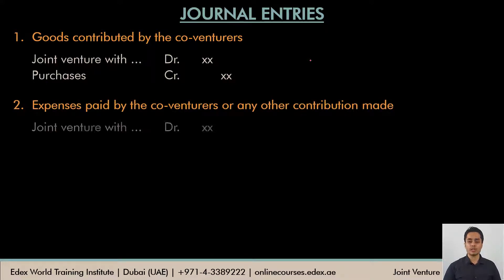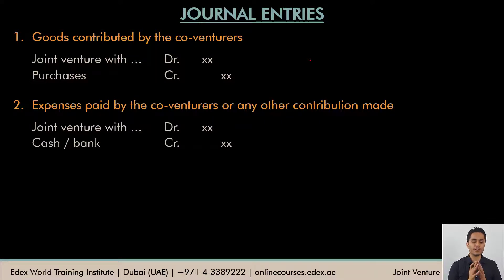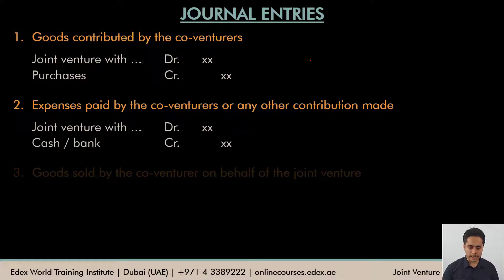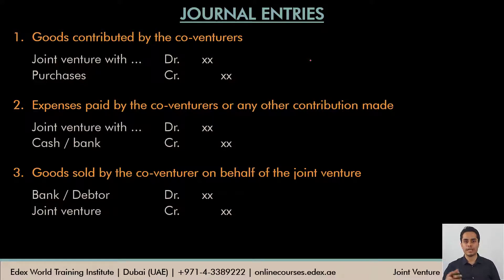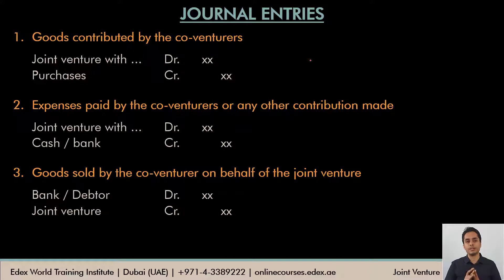Co-venturers may also pay an expense on behalf of the joint venture business — again they are to be compensated, so joint venture would be debited and cash and bank would be credited. When the goods are sold, the co-venturer may receive money on behalf of the joint venture business and is liable to pay it back, so the joint venture account would be credited and the bank account debited if received by check, or the debtor account debited if it is a credit sale.